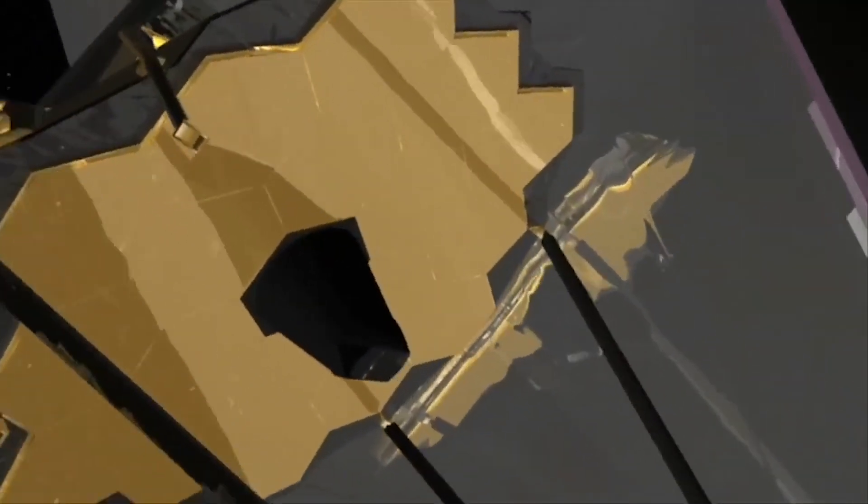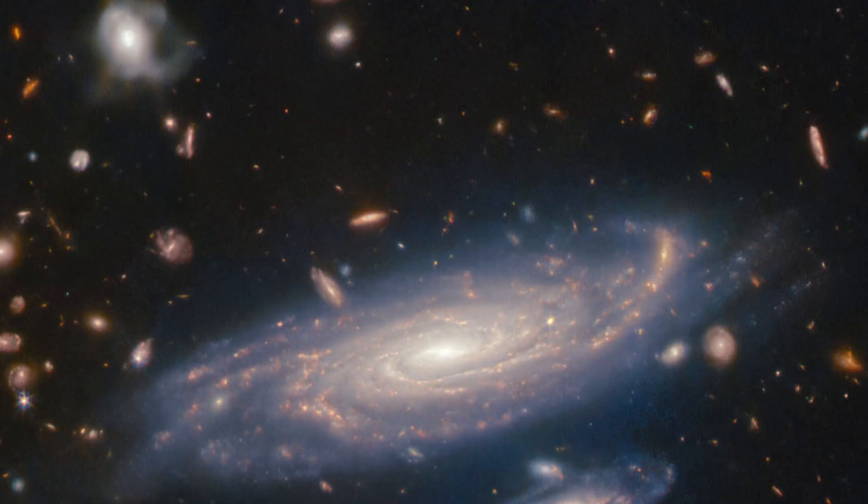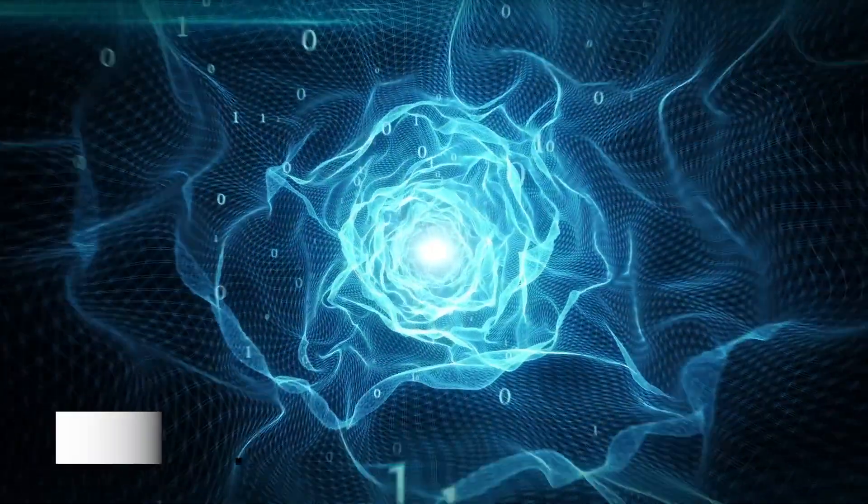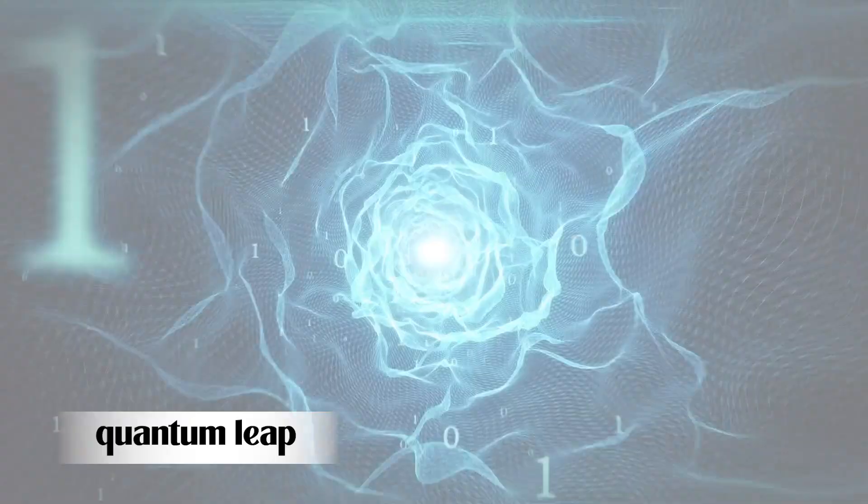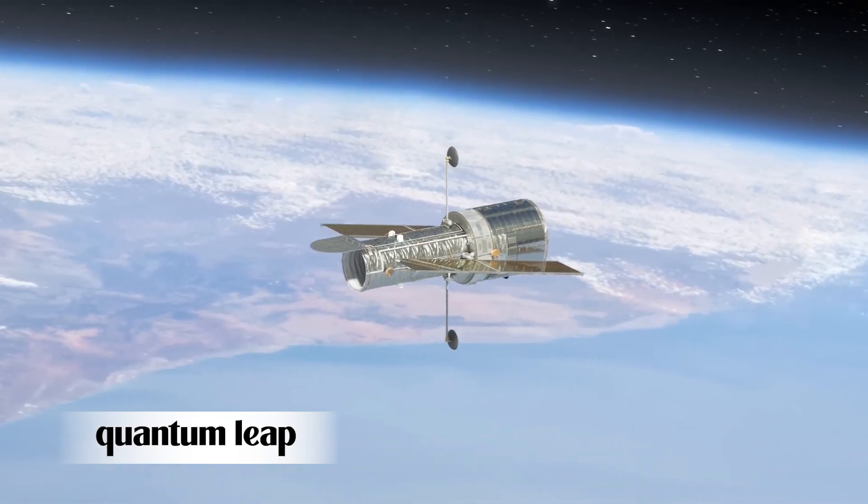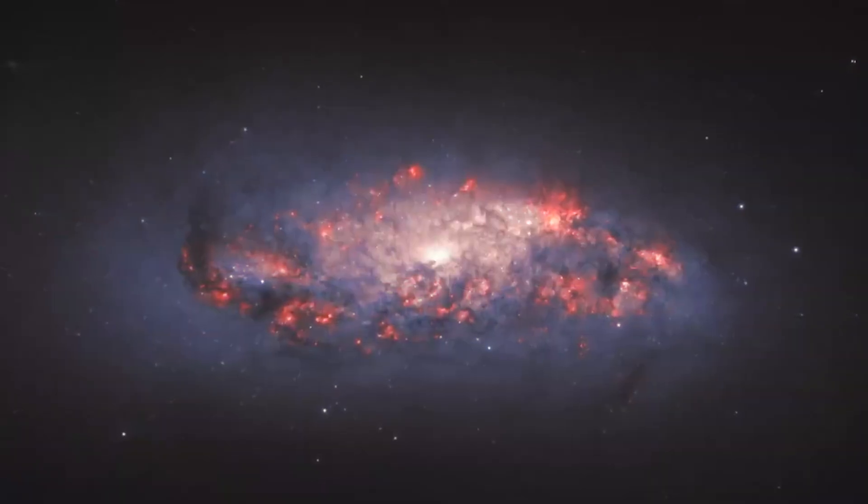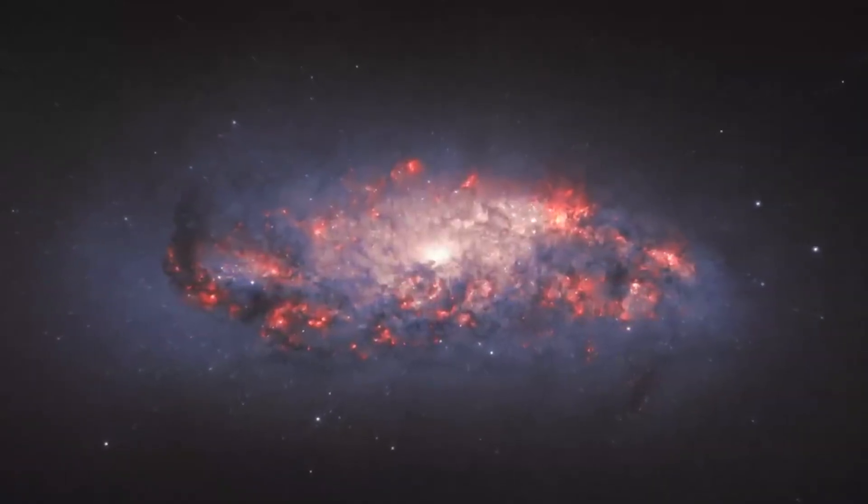The James Webb telescope, with an estimated range of approximately 13.5 billion years, doesn't represent a quantum leap beyond its predecessor, the Hubble telescope. However, what sets Webb apart is its ability to peer more deeply into space and discern finer details.